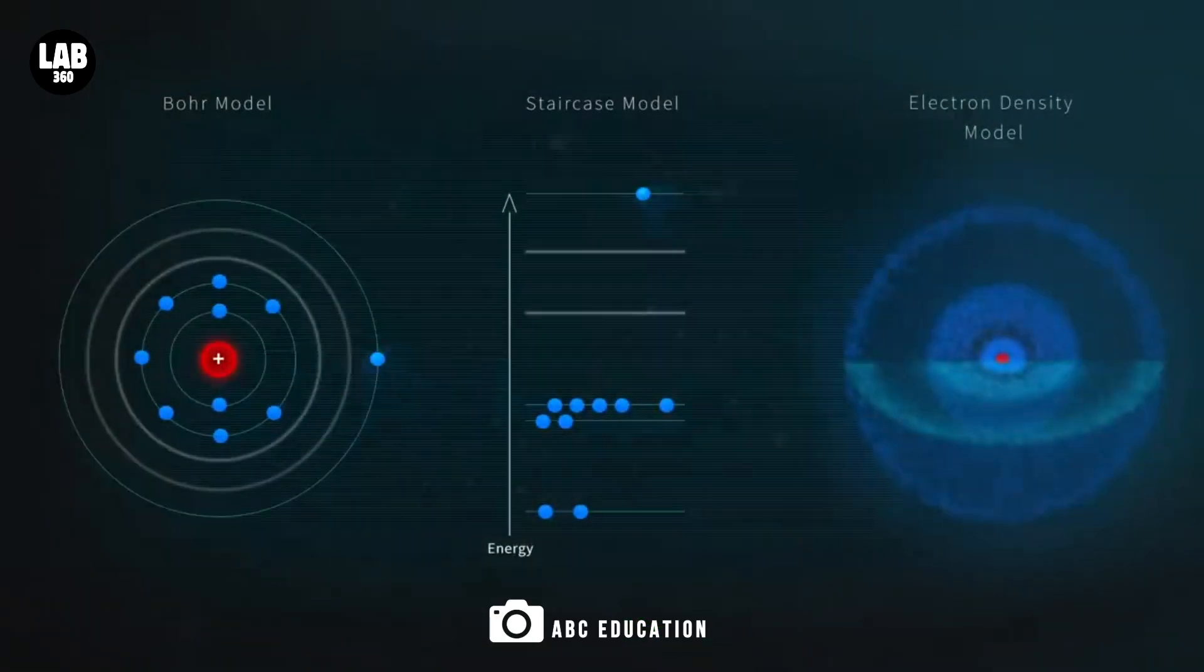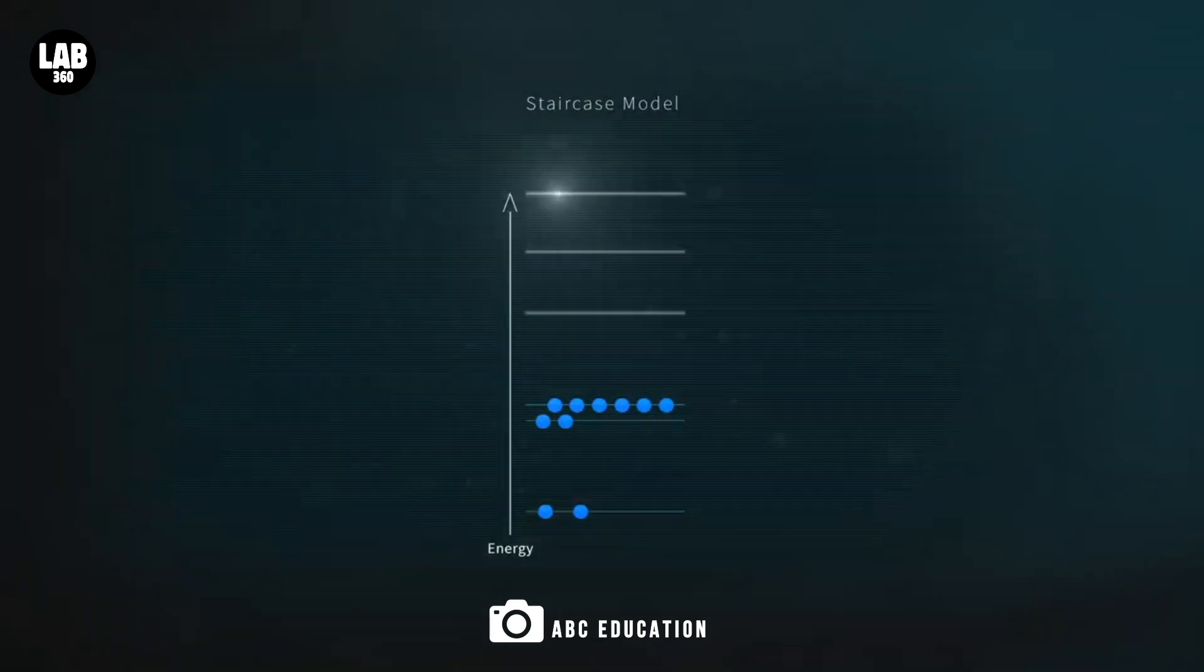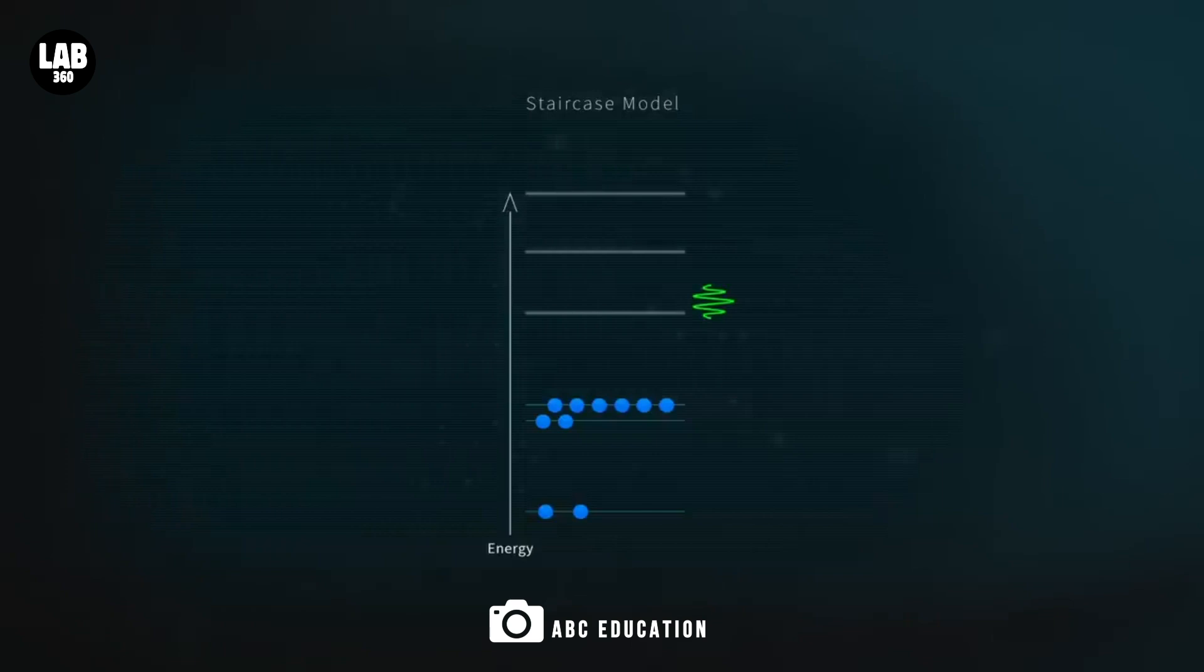At the heart of an atomic clock are atoms with two potential energy states. When these atoms absorb energy and shift to a higher state, they later release that energy, returning to their lower ground state. This cycle is incredibly consistent and forms the basis for accurate time measurement.